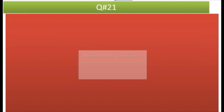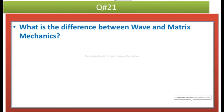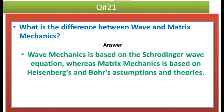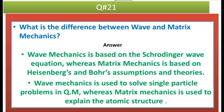Question 21: What is the difference between wave and matrix mechanics? Wave mechanics is based on the Schrödinger wave equation, whereas matrix mechanics is based on the Heisenberg and Bohr assumptions and theories. Wave mechanics is used to solve single particle problems in quantum mechanics, whereas matrix mechanics is used to explain the atomic structure.